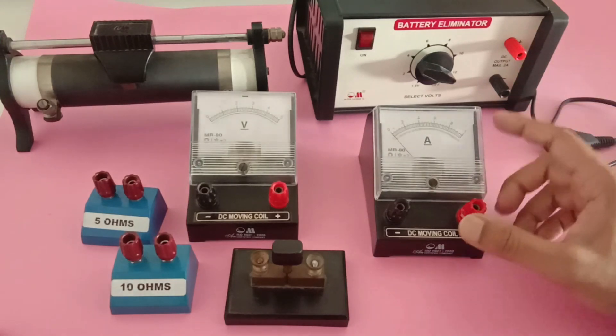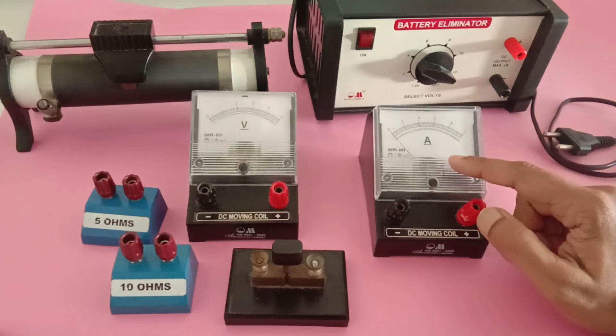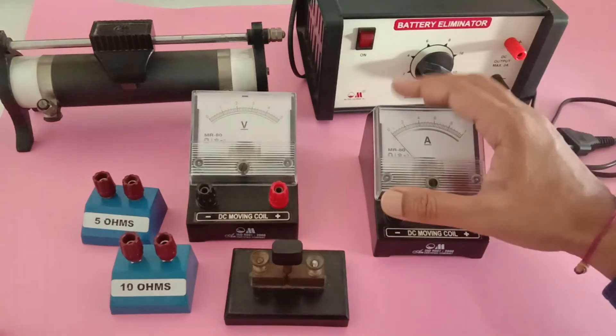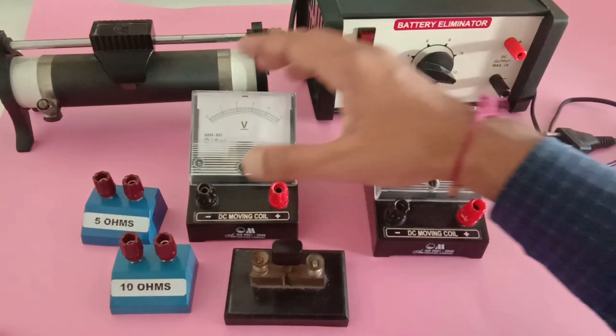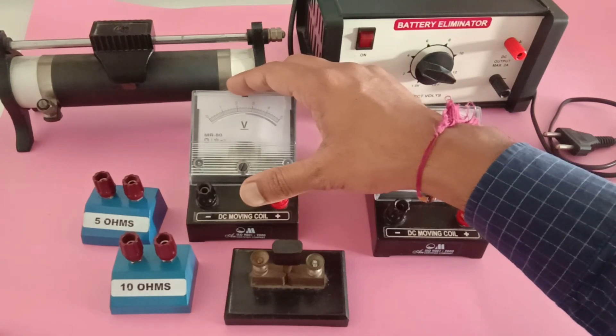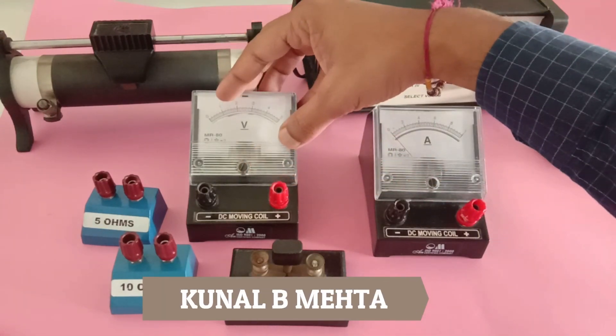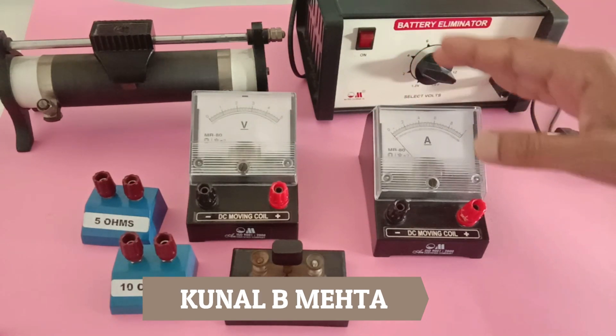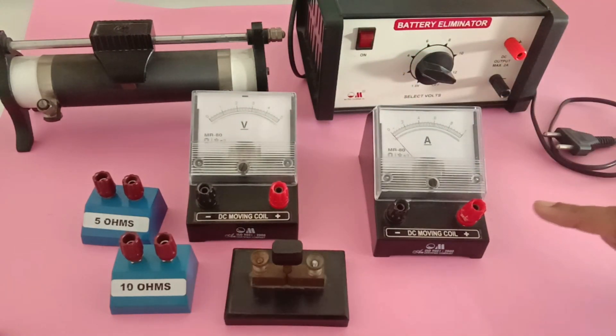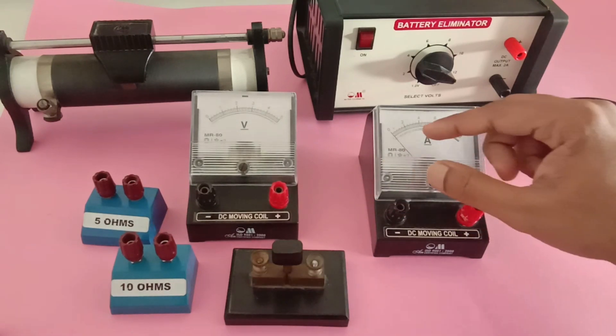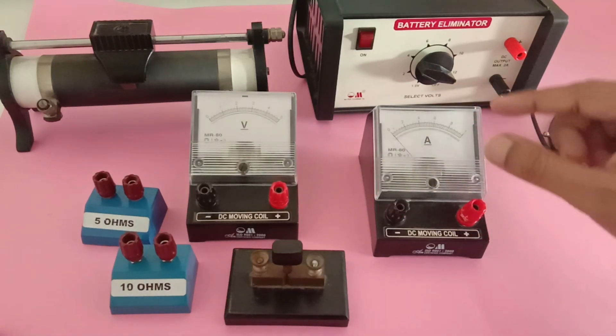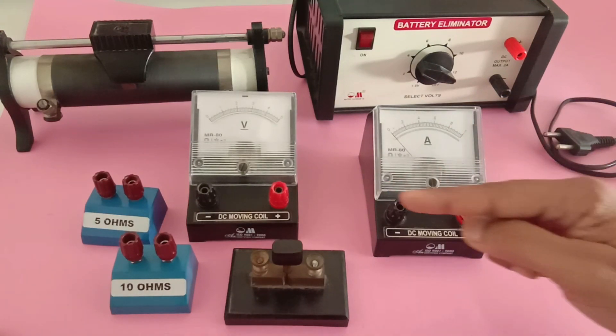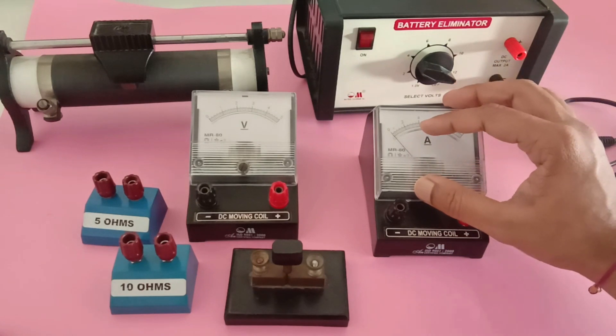It is compulsory to connect the ammeter in series with the resistances. The ammeter is always connected in series, while the voltmeter is always connected in parallel. Always remember: the voltmeter's internal resistance is very high, while the ammeter's internal resistance is very low. The current passes through the ammeter and is recorded. Current will only pass through the ammeter if its internal resistance is very low.